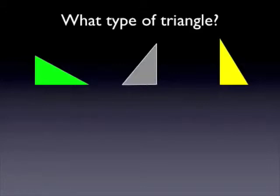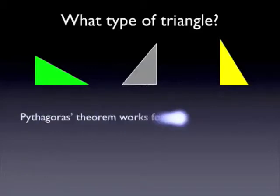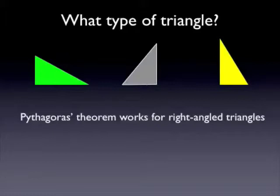These three triangles are a special type of triangle, and Pythagoras' Theorem works for this type of triangle. They are all, of course, right-angled triangles. So Pythagoras' Theorem works for right-angled triangles. That's the first thing you need to remember about the theorem.